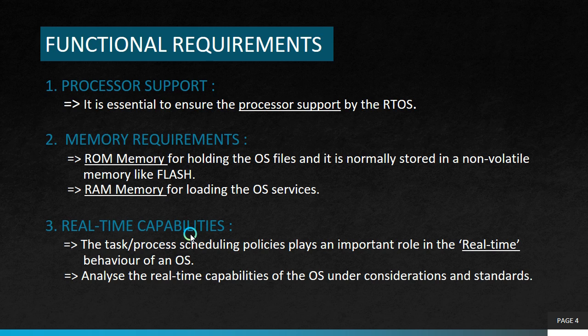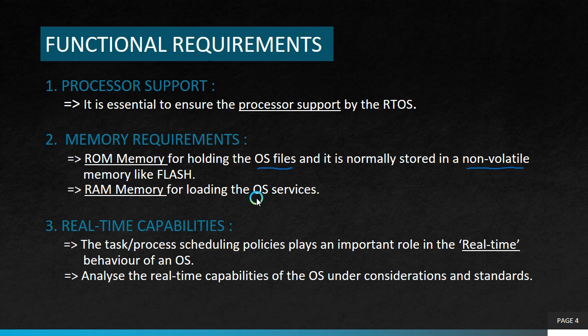Next we move on to memory requirements. The OS requires both ROM memory and RAM memory — read-only memory and random access memory. ROM is used for holding the OS files and is normally stored in non-volatile memory like flash, where data is retained after a power cycle. RAM is volatile memory used for loading the operating system services. Since embedded systems are memory constrained, it is essential to evaluate the minimal ROM and RAM requirements for the OS under consideration.